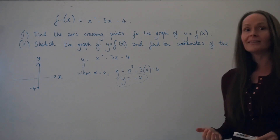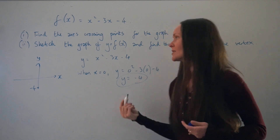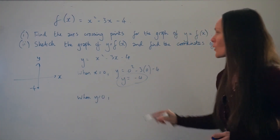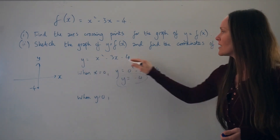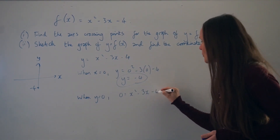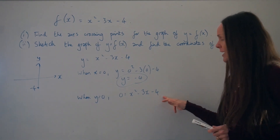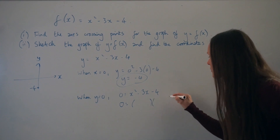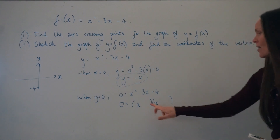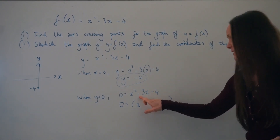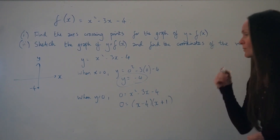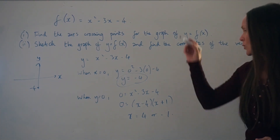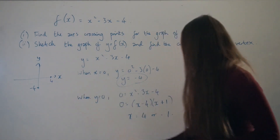Now for where the graph intersects the x-axis, the y value is 0. So setting 0 = x² - 3x - 4, we need to solve this quadratic equation. We can factorise it: the two numbers must multiply to give -4 and add to give -3, so they are -4 and +1. That gives x values of positive 4 and negative 1, so the graph crosses the x-axis at 4 and -1.